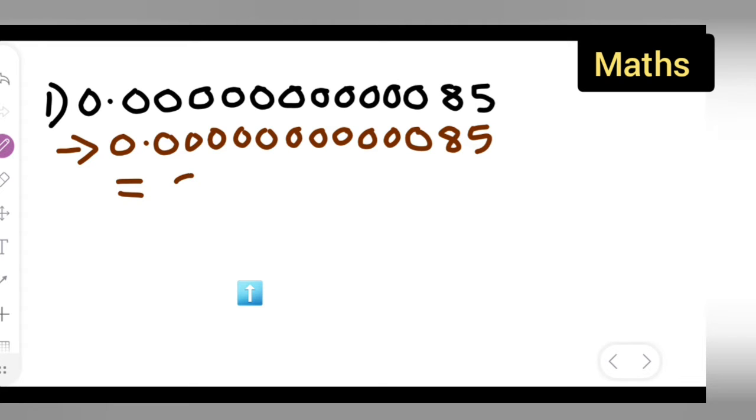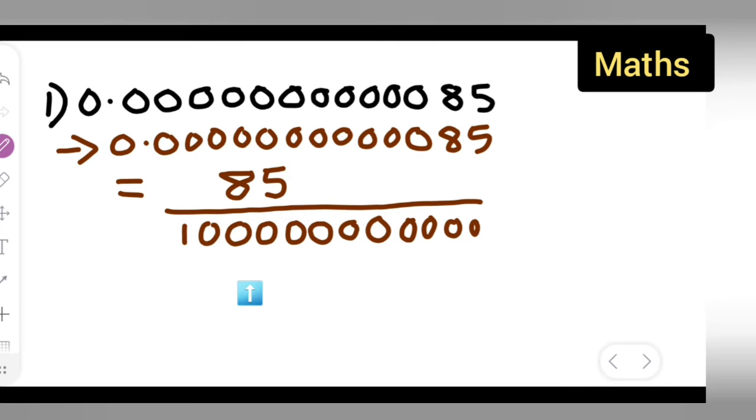So you'll have to write down 85 upon 13 zeros.